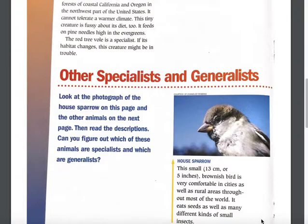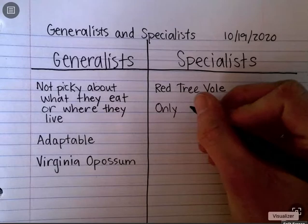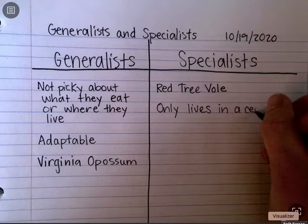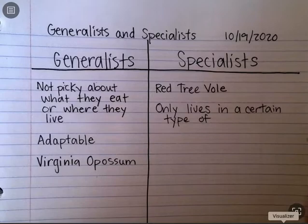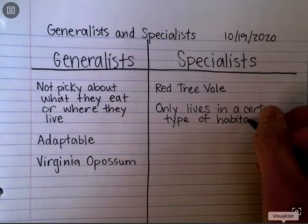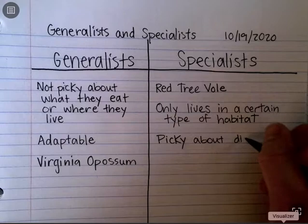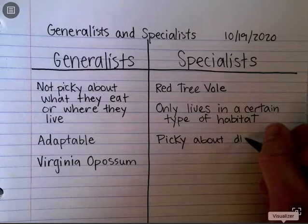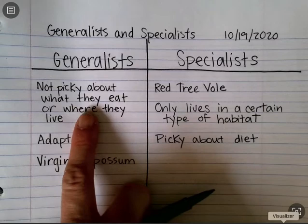The red tree vole only lives in a certain type of place — a word for that would be habitat. The article also said that it's picky about its diet, or what it's eating. I noticed that these details about specialists are very different from what we've learned about generalists.